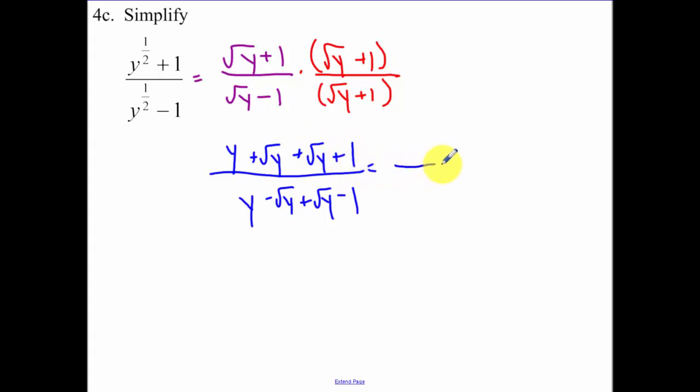So on the bottom, the reason again the conjugate works is because those now cancel, and all I'm left with on the bottom is y minus 1. On the top we have y plus 2 root y plus 1. I'm okay if you leave it like that, and I actually teach this slightly different than the book. So what the book leaves it as is 2 times y to the 1/2 power plus 1. I don't care which one you do. They're the same thing. You're really doing the same thing two different times.